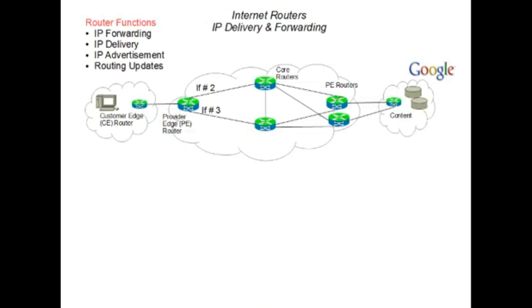In this example we have a customer edge router. That edge router could be at a home — a gateway as we've discussed before — or it could be a gateway at a large enterprise where there could be hundreds or even thousands of hosts at the premises, all going into the internet via a gateway. Then we have a provider edge router, which is the pair of the customer edge router, and we have core routers, and finally a content router at the destination — again we use Google as our destination.